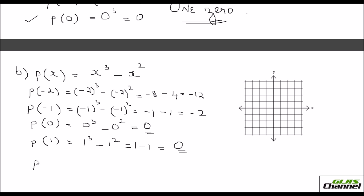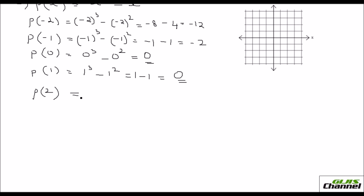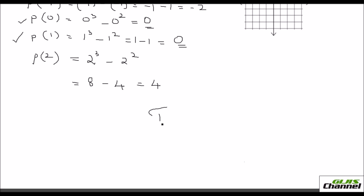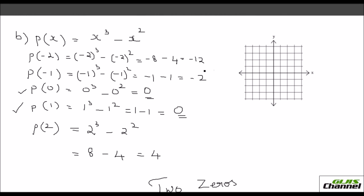When you take P of 2, it is going to be 2 cubed minus 2 squared, which is 8 minus 4, so that's a positive 4. So you find there are only 2 zeros here.